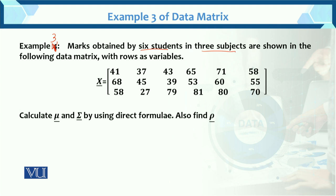We have 3 subjects, so we have 3 variables. Variable basically means the 3 subjects that vary. Object means the 6 students. So we have 6 objects and 3 variables, with rows as variables in the data matrix.